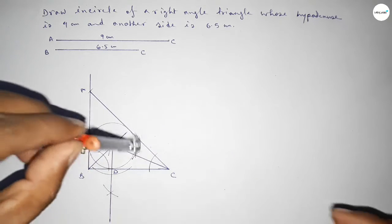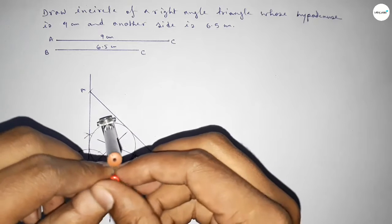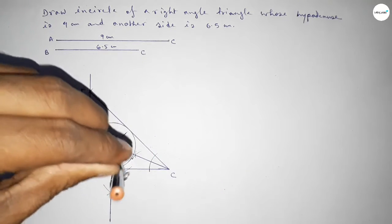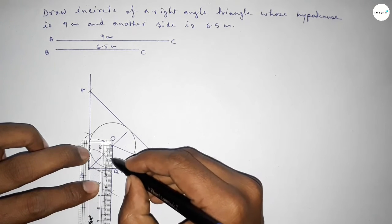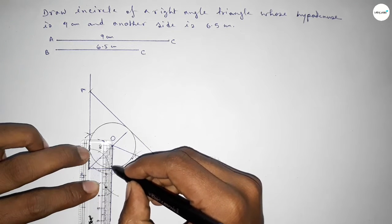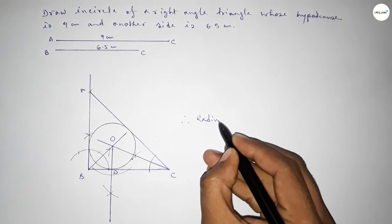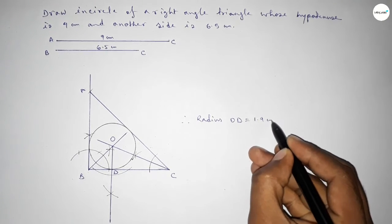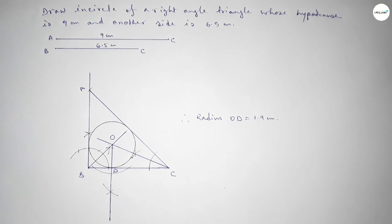Now taking the length OD using the compass and drawing a circle. This represents the incircle. Checking the radius: OD equals 1.9 centimeters. That's all — thanks for watching. If this video is helpful, please share.